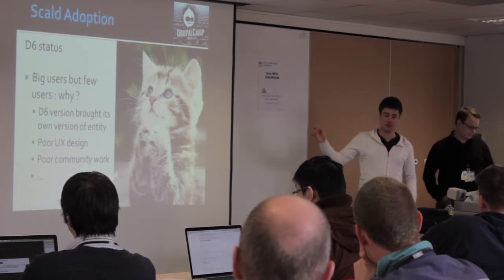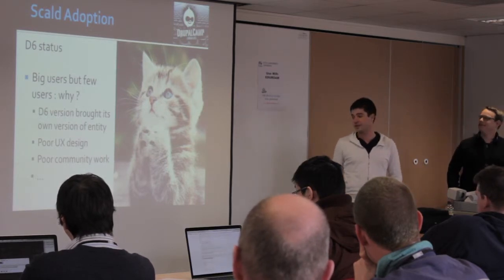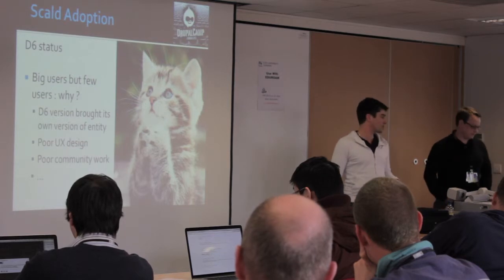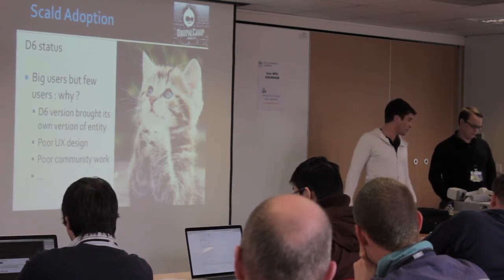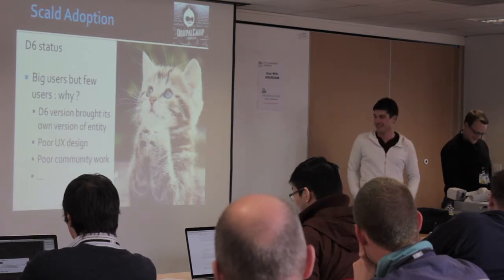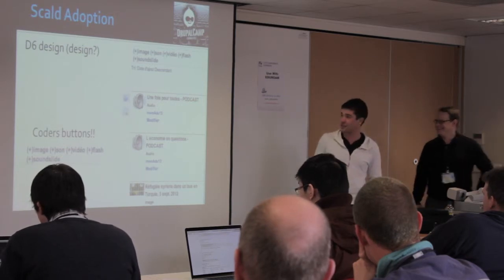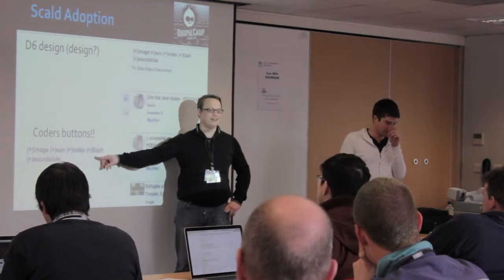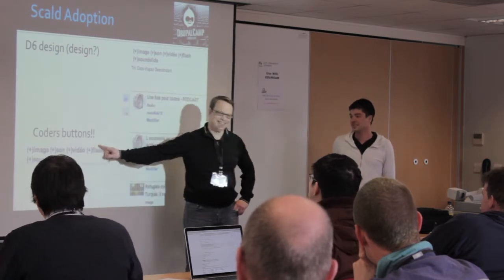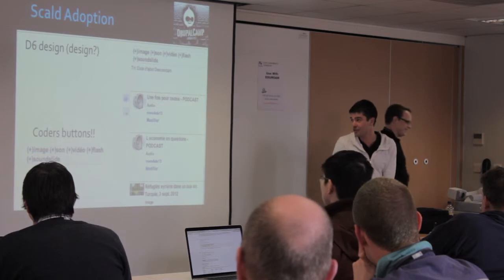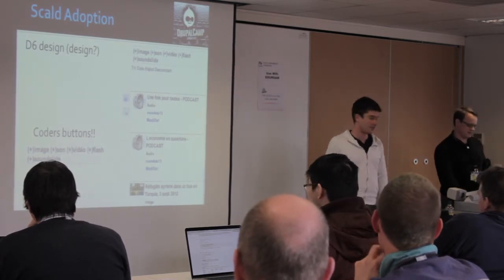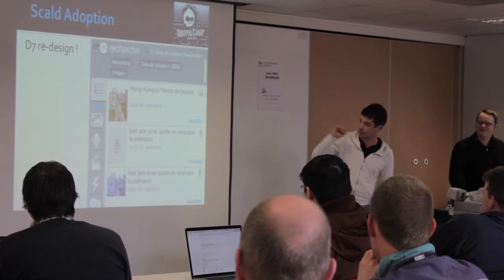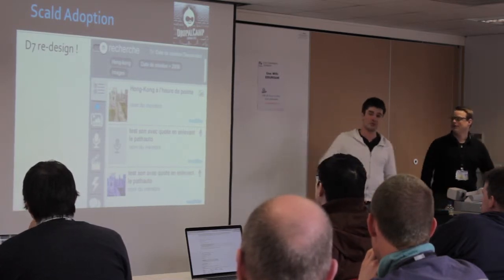The UX design was very, very poor. I'll show you just that. And there was less community work — we didn't communicate, we didn't make conferences about this module. Now this has changed in the D7 version. This was the D6 design — the multi-media library. It was made for coders by coders, so there wasn't much success. After we hired a UX engineer and designer, it became much more usable. We'll make you some demos after.